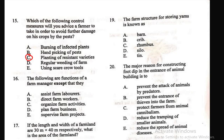Question 16: The following are functions of a farm manager except — A) assist the farm laborers, B) direct farm workers, C) organize farm activities, D) plan farm business, E) supervise farm projects. The farm manager cannot directly assist farm laborers, so A is the right answer.